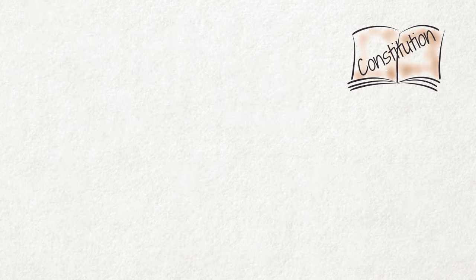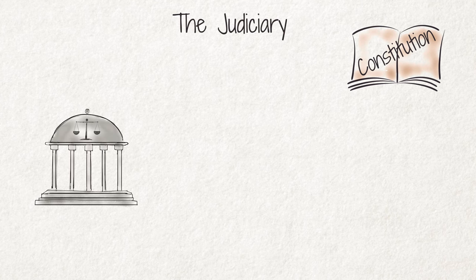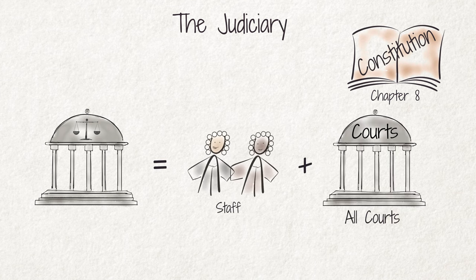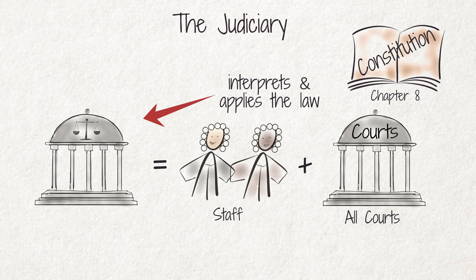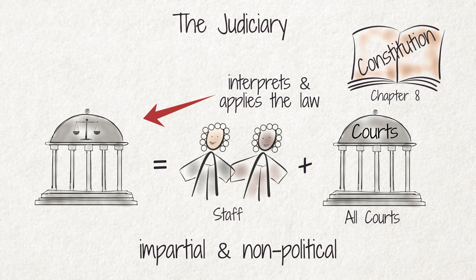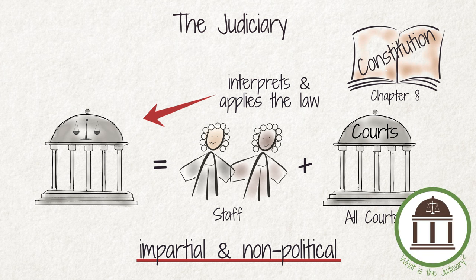The third branch is the judiciary, established by Chapter 8 of the Constitution. This branch includes all courts as well as all judges and magistrates working in these courts. The judiciary interprets and applies the law. In contrast to the other two branches, which are made up of political party representatives, the judiciary has to be impartial and non-political. We explain the tasks and responsibilities of the judiciary in more detail in our video, "What is the judiciary?"